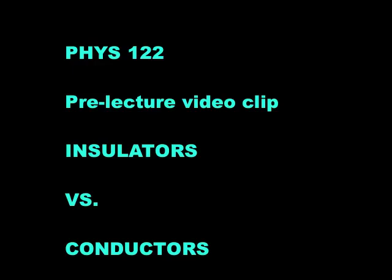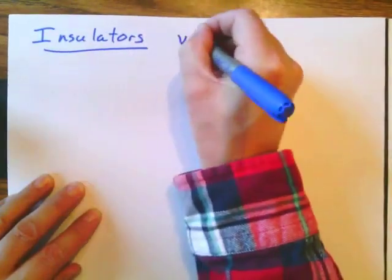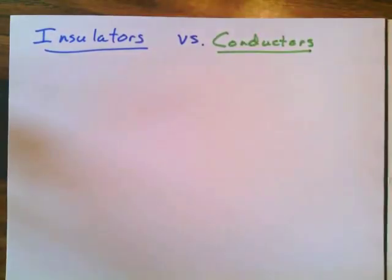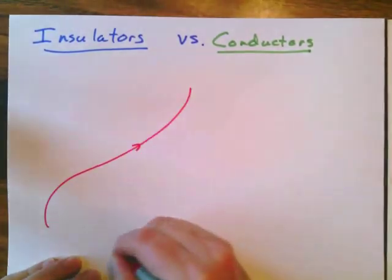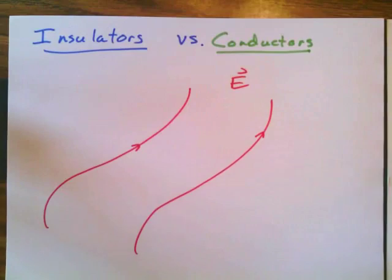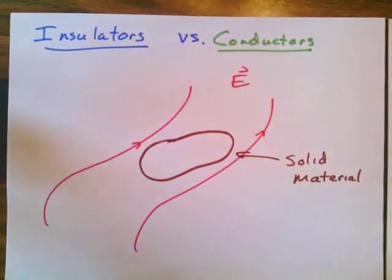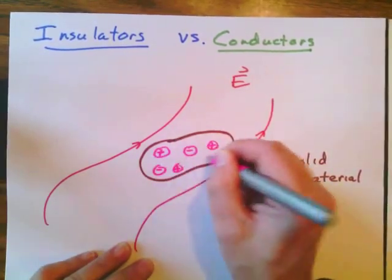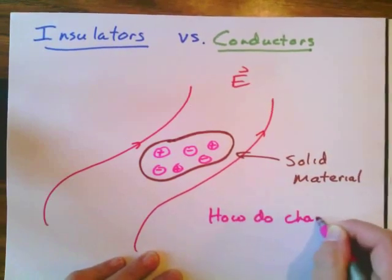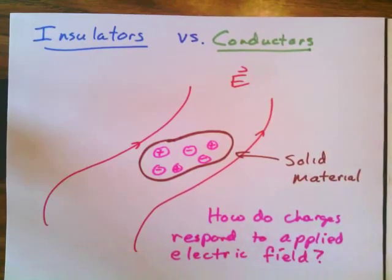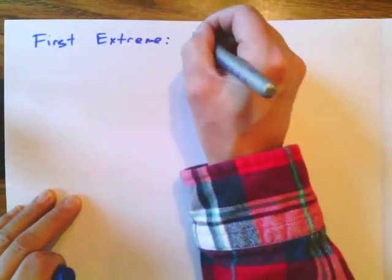Today we're going to talk about the difference between insulators and conductors — two extreme types of materials. The whole issue has to do with the question of what happens if we have an electric field and take some typically solid material, and we ask what happens to the electric charges embedded within that solid material. A typical material will have both positive and negative charges, and we want to know how those charges respond to an applied electric field. There are two extremes we want to look at today.